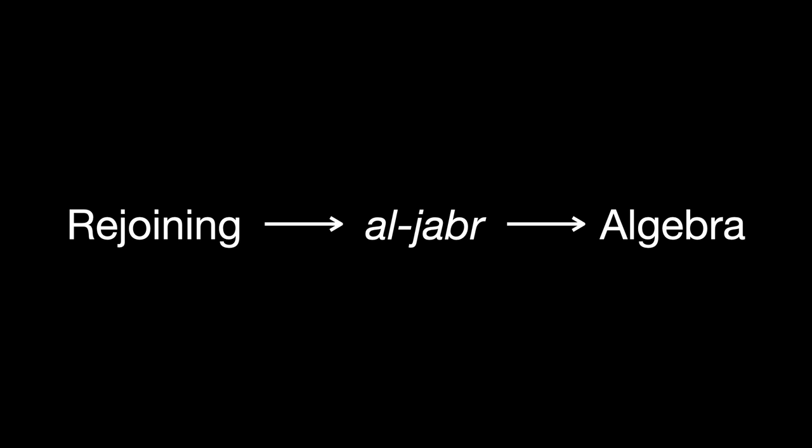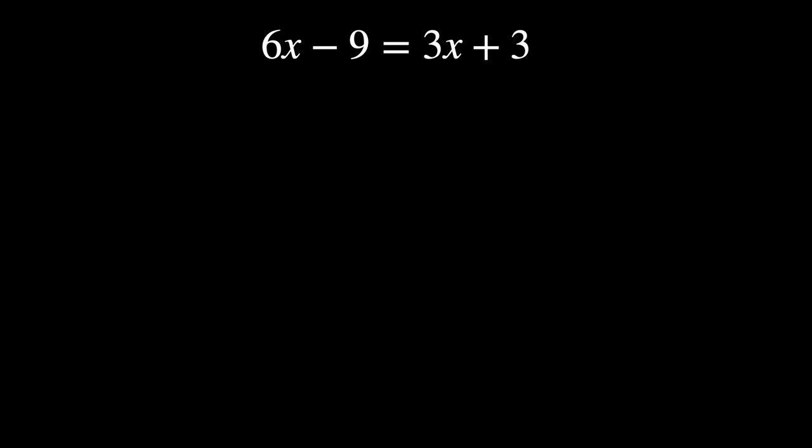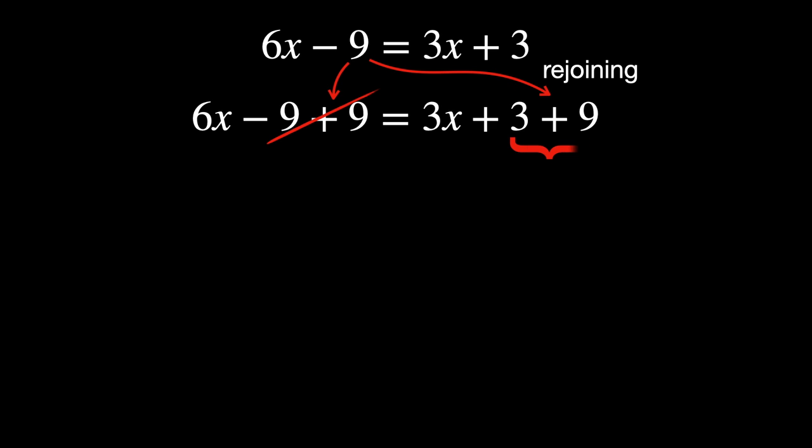Here's an example of what Al-Khwarizmi meant by his terms. Suppose we have an equation. According to Al-Khwarizmi, to rejoin it, we must add 9 to both sides. And then to balance it, we must perform the operation to cancel the terms out. And so we continue to do the same until the equation is eventually solved for x.